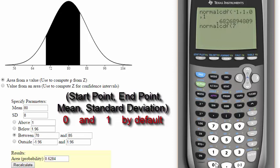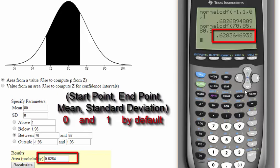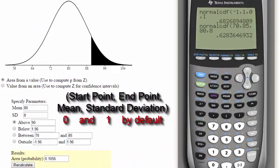We are not using the standard normal here, so we will need to enter the mean of 80 and the standard deviation of 8. As you can see, the area we get of 62.84 matches exactly to the applet picture on the left.